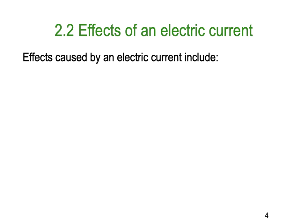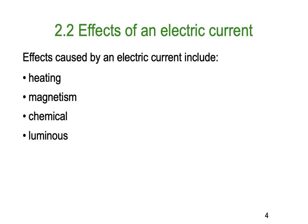Effects caused by an electric current include heating. Almost always you're going to have heating — the only time you're not is if you happen to be using a superconductor that has no resistance; otherwise, you'll always have a heating effect. No matter what kind of conductor you're using, there'll be some form of magnetism. Sometimes, but not always, you can have chemical effects, mostly when using battery cells. And of course, there can be luminous effects, where a current emits light. Finally, a physiological effect — our bodies are made up of bio-electrical systems, and if they come into contact with too much electrical current, we can have huge problems.